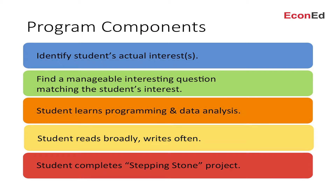I address these issues with a five-component program. I take three to five weeks to identify the student's revealed interest — not necessarily what the student thinks they're interested in, but their revealed interest. We then spend time finding a manageable yet economically interesting question. The student learns programming skills and develops data analysis skills. They get to read broadly, write often, and get feedback, and then eventually they complete a stepping stone project. In the next ten minutes I want to zoom in on each of these five components — more details are available in the notes online.